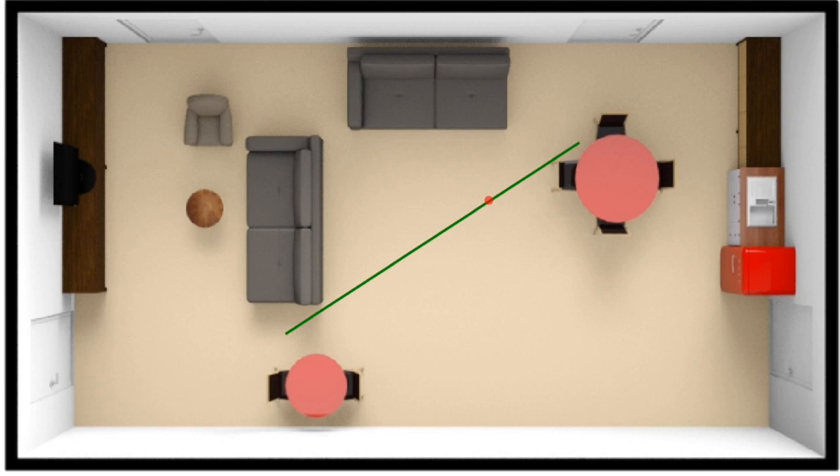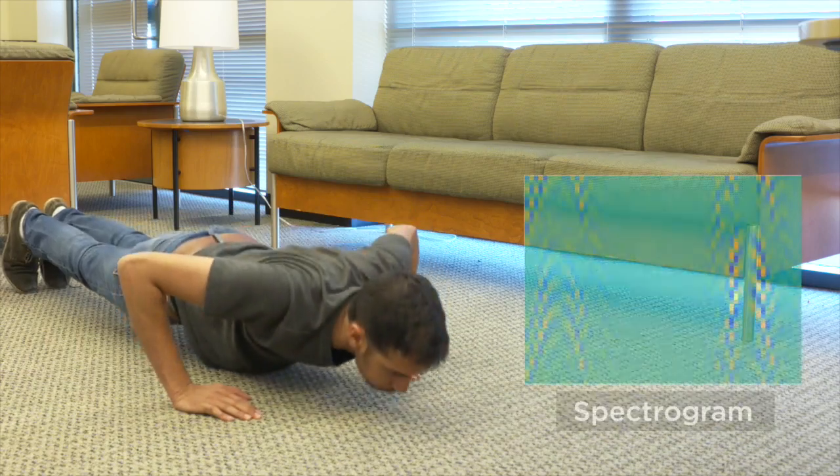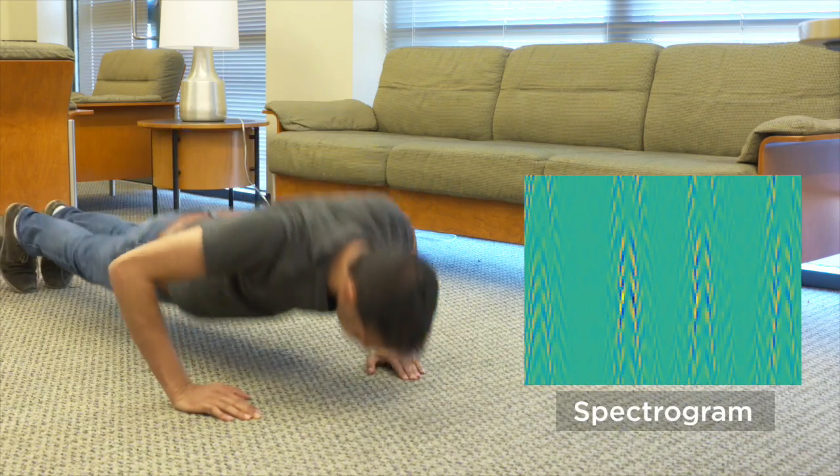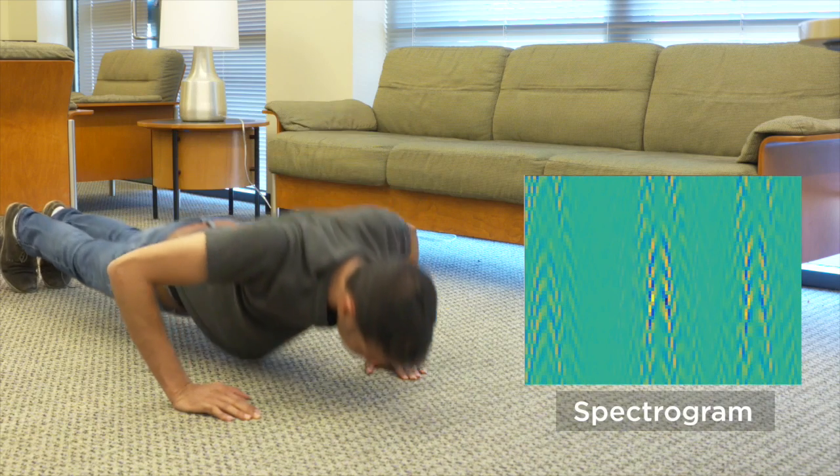In addition to tracking people, CovertBand can also distinguish between broad classes of movement. Here, it can clearly distinguish between rhythmic motions and linear ones like walking.